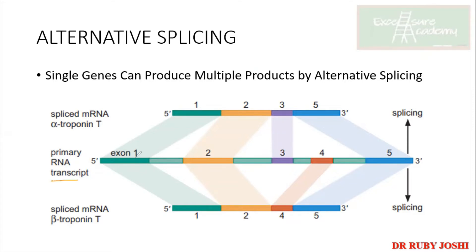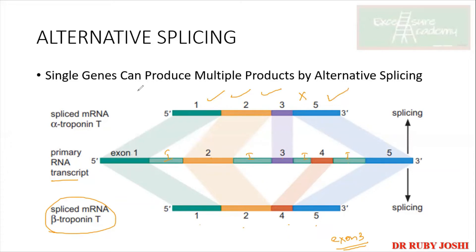If splicing gives sequences 1, 2, 3, and 5 — skipping exon 4 — it results in alpha-troponin T. So the same transcript, due to alternative splicing, gives different isoforms of the protein. Alpha and beta forms differ because of differences in which exons are included — just because of differences in exon arrangement, you get different expressions of the protein.